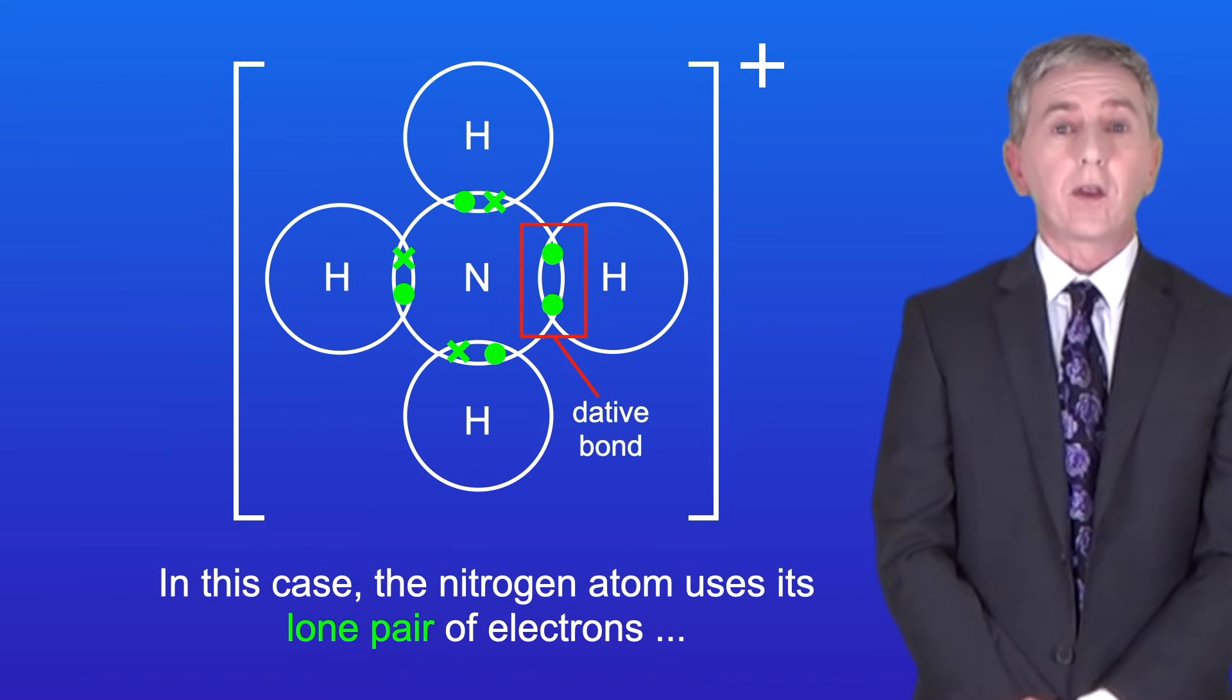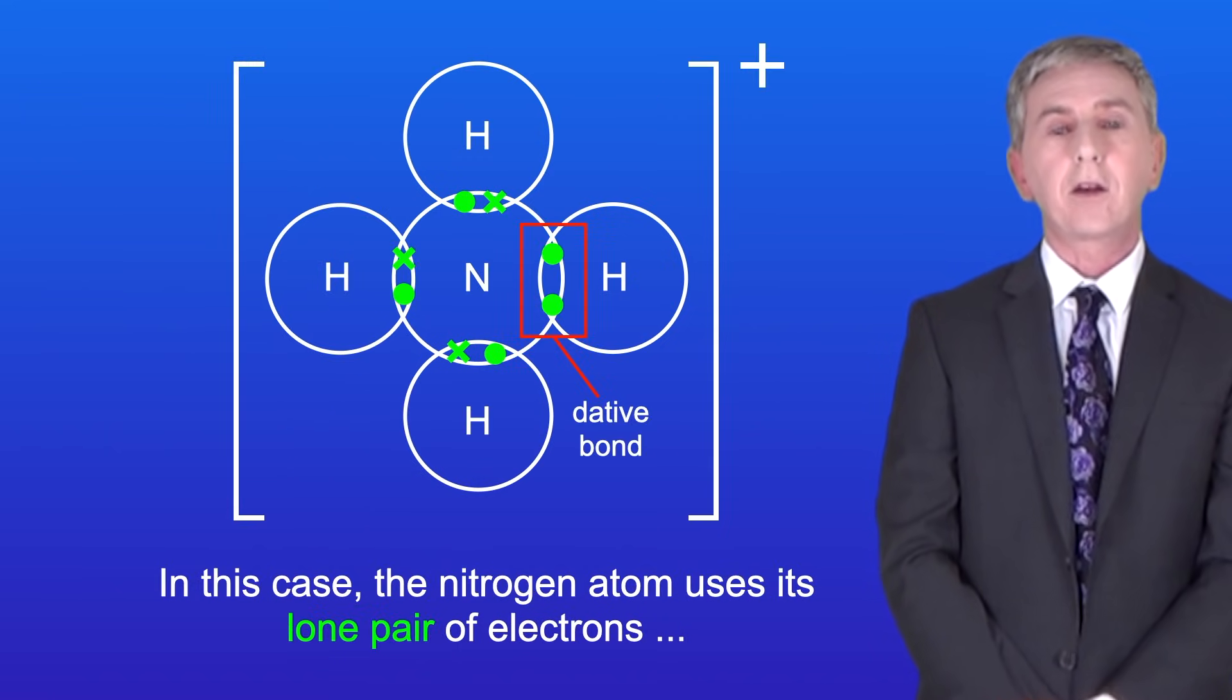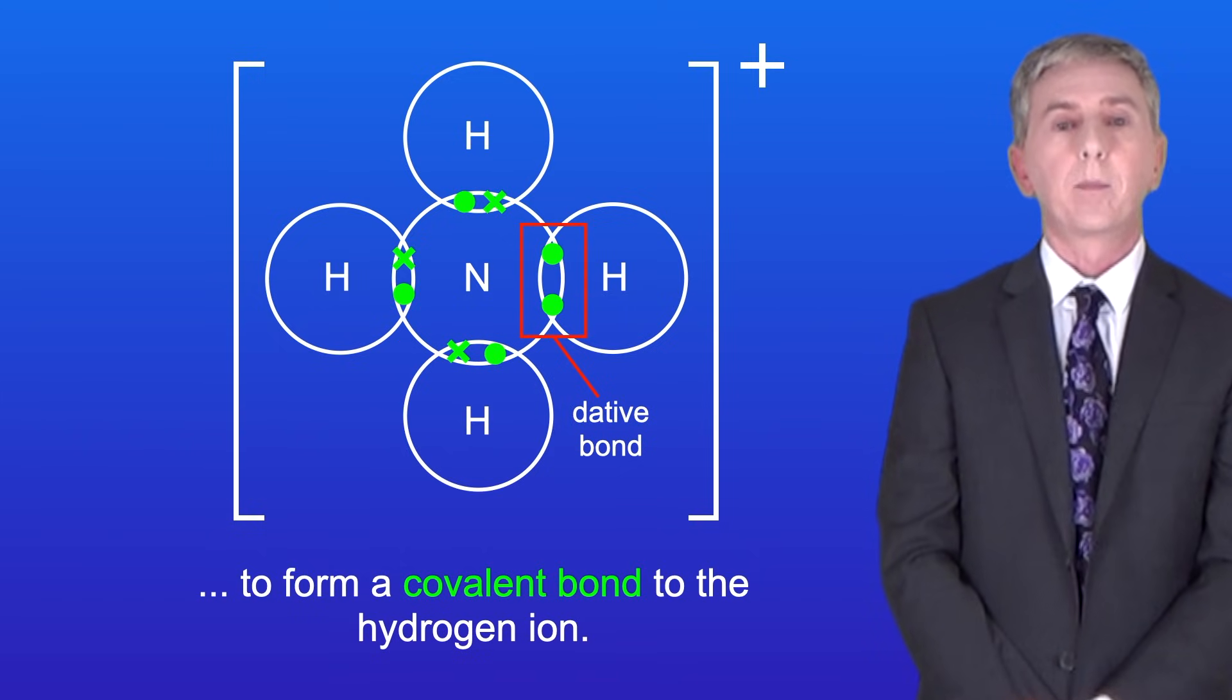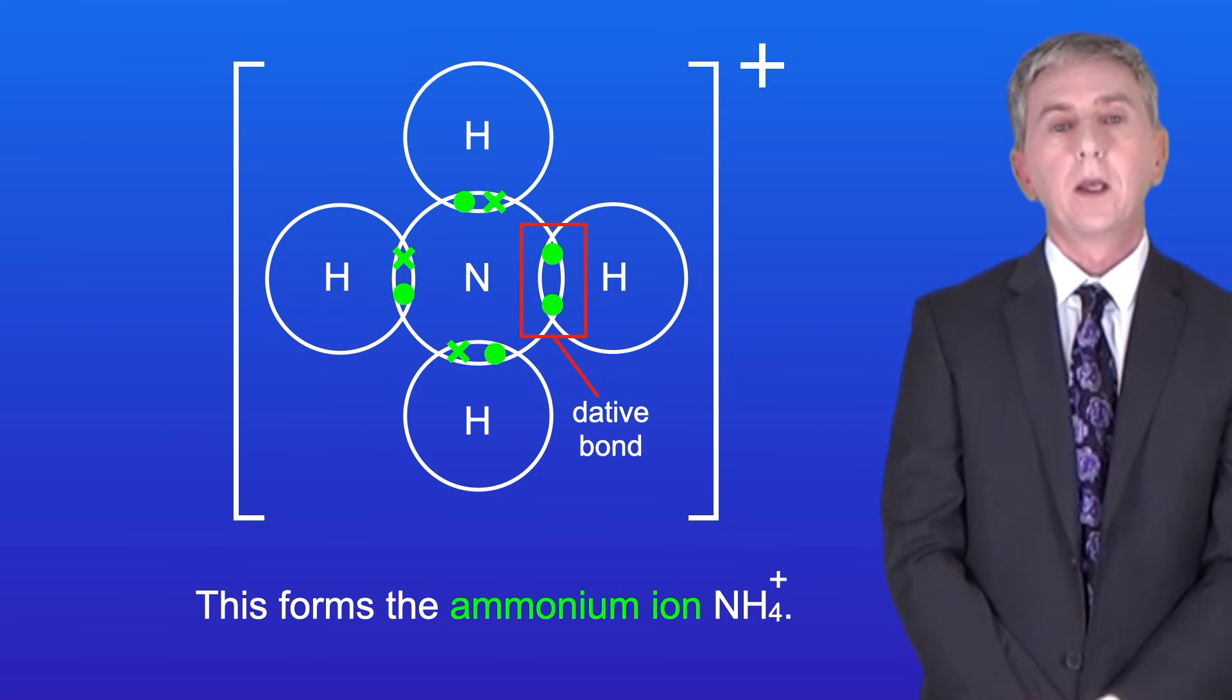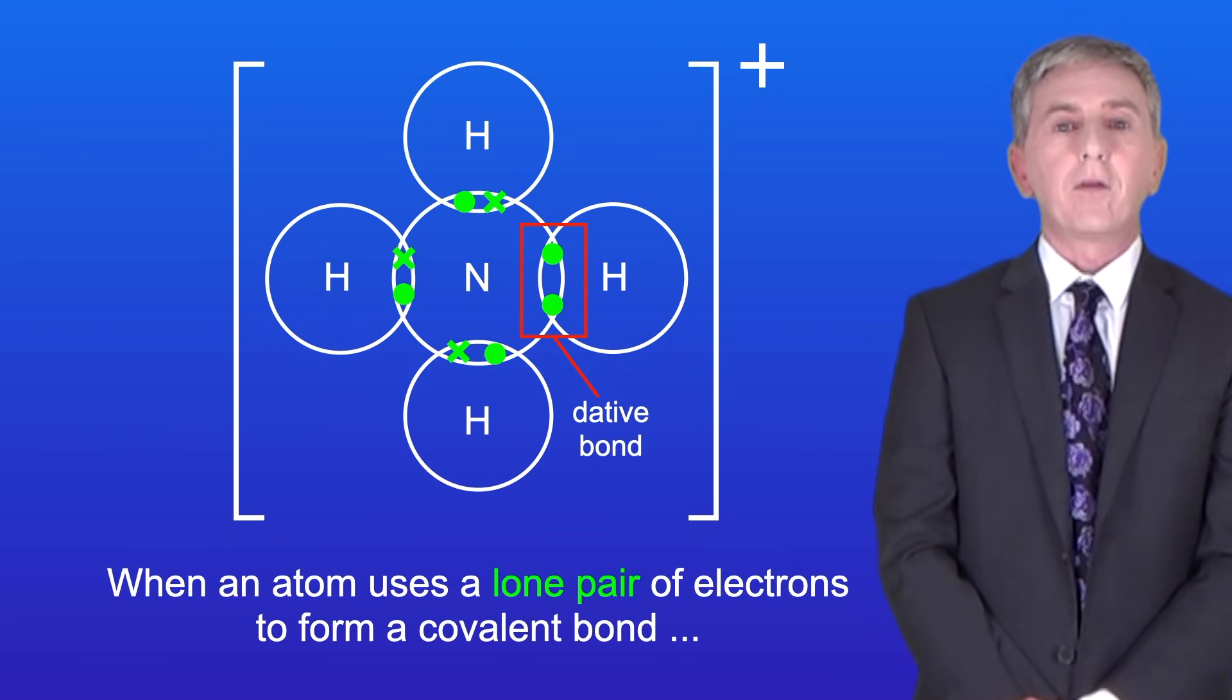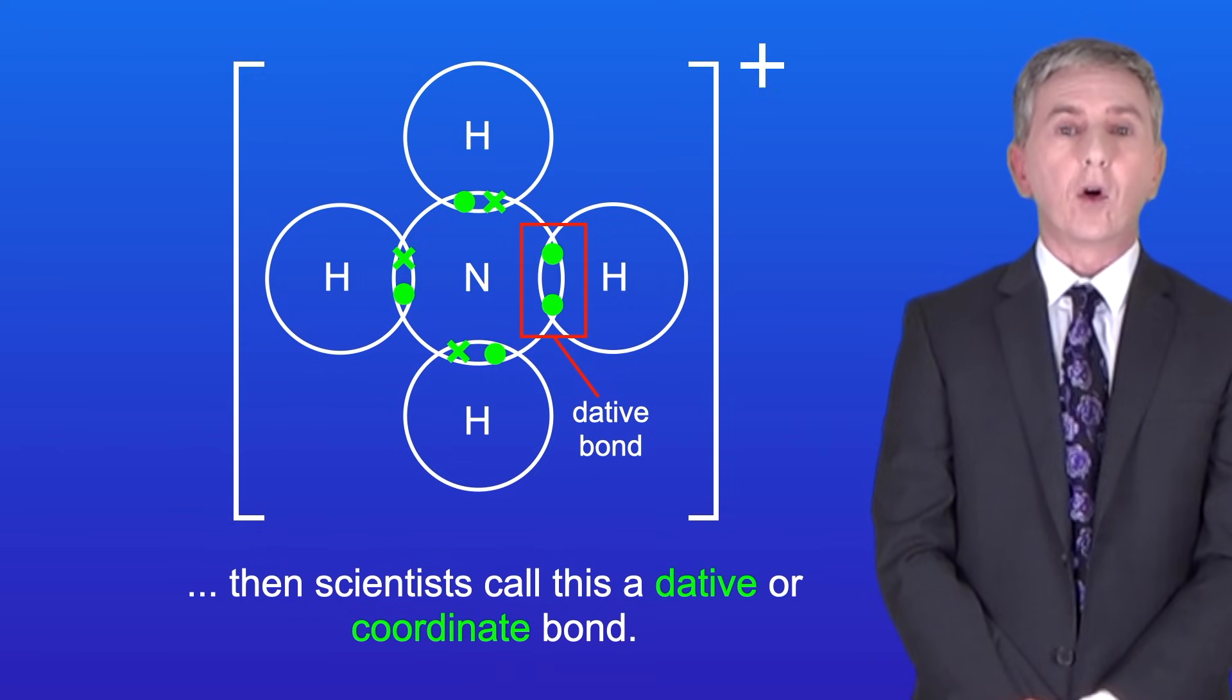So in this case, the nitrogen atom uses its lone pair of electrons to form a covalent bond to the hydrogen ion, and this forms the ammonium ion NH4+. When an atom uses a lone pair of electrons to form a covalent bond, then scientists call this a dative or coordinate bond.